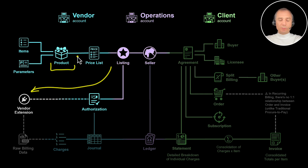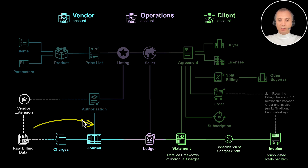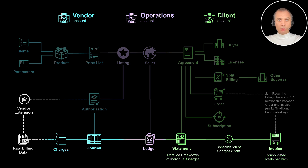All those orders are processed typically by automated extensions that work with our platform in the scope of a given product. And then once those subscriptions are established in the platform, our vendors submit billing data consisting of detailed charges — sometimes hundreds and even thousands of charges for a given agreement — that ultimately our clients will receive in the form of the statement, which is a detailed breakdown document, and an invoice, which is the consolidated document generated based on the statement with consolidated charges in the scope of a given item.